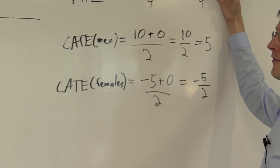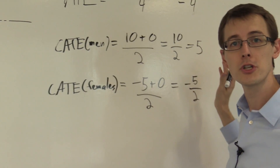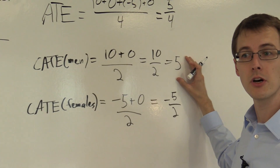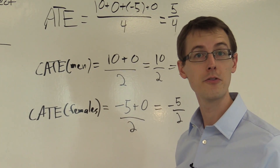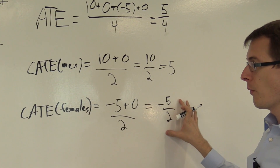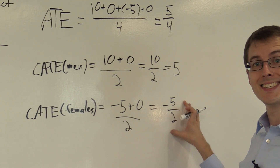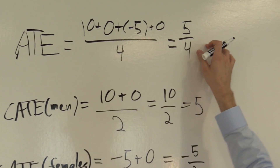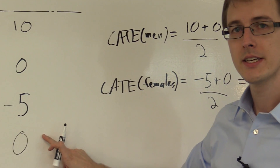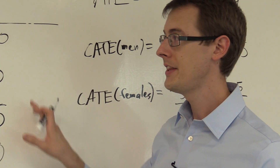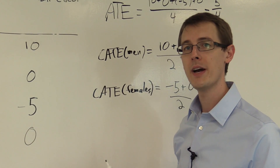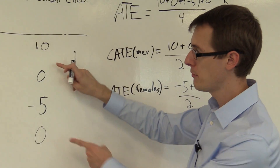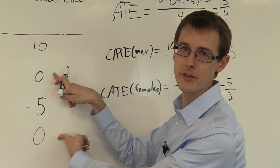So we see the average treatment effect is 5/4 — positive — so we usually conclude treatment must be good. For men it's even bigger, so the treatment is very good for men. For women, the conditional average treatment effect is negative, so the treatment is actually bad for women. This illustrates treatment effect heterogeneity: in this example, the treatment affects different people differently. This person benefits, this person is hurt, and both of these people are unaffected whether they're treated or not.